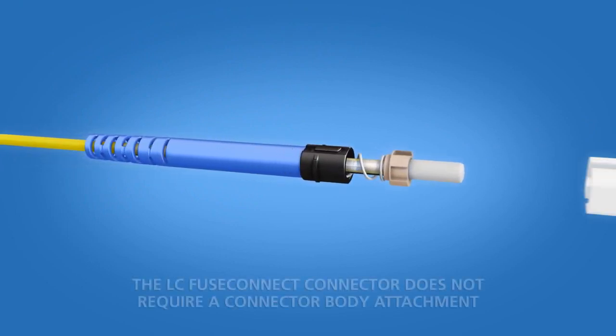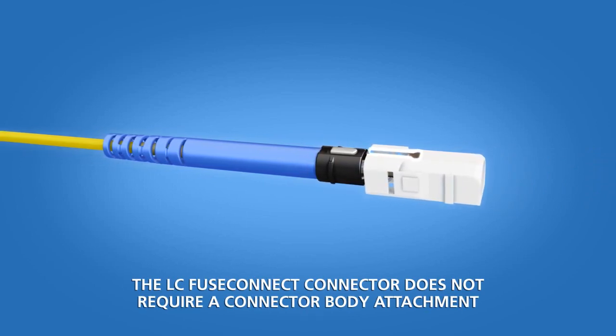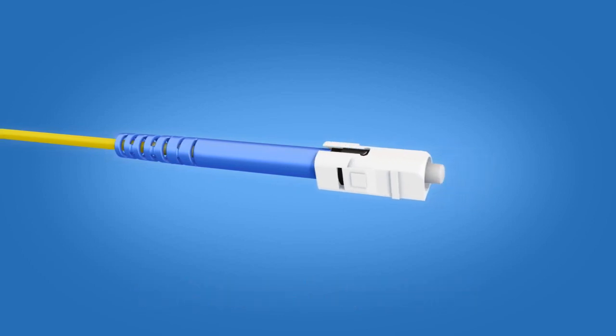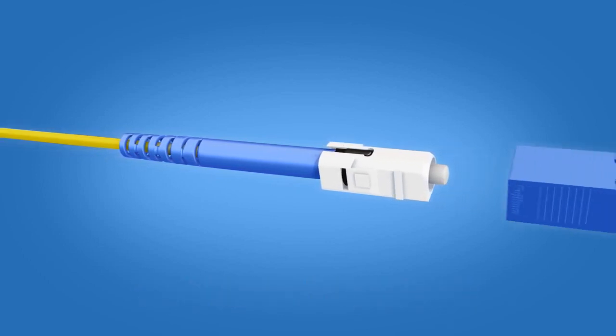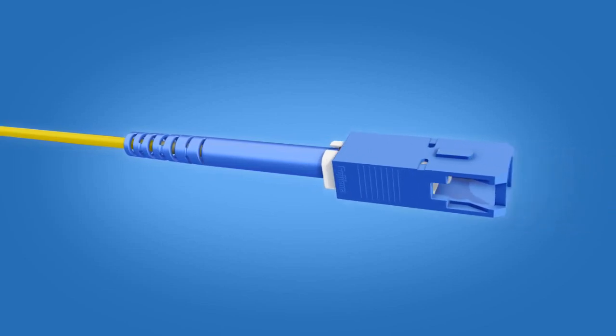Slide the connector body onto the connector ferrule. Align the opening in the body and the key on the boot. Push until a click is heard. Slide the connector housing onto the connector body. The key on the housing and the key on the boot should align. Push until a click is heard.